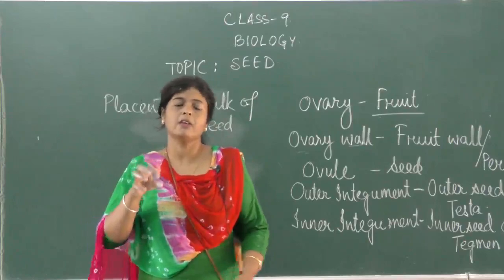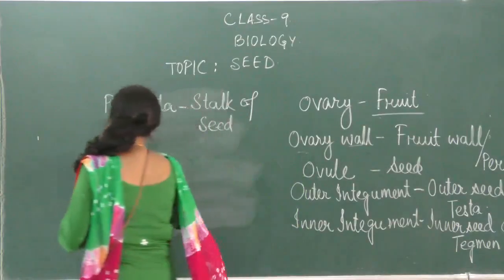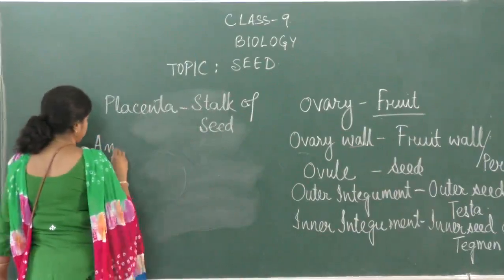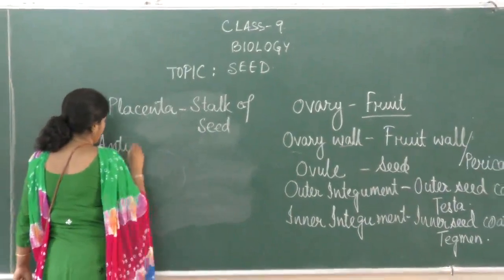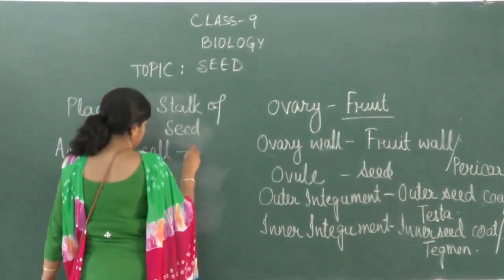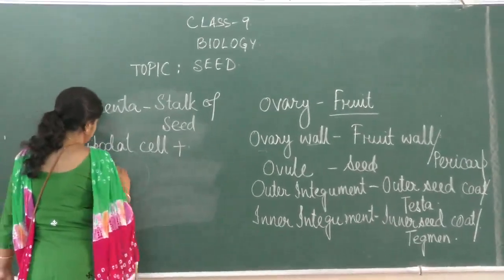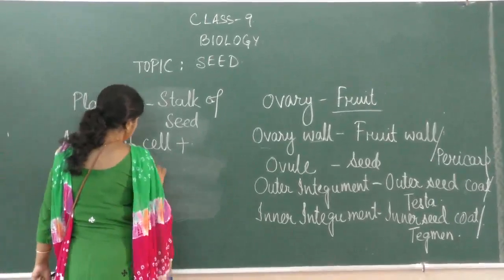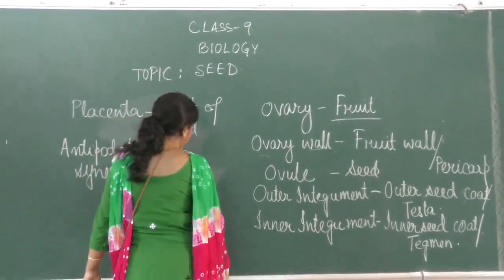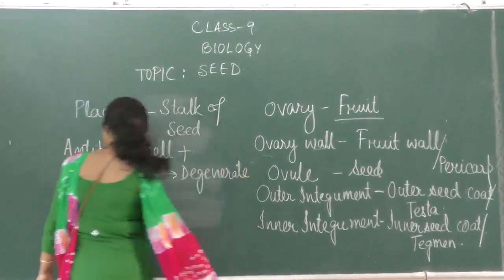Inside the ovule there are antipodal cells and synergids. These degenerate after fertilization and are not found anymore.